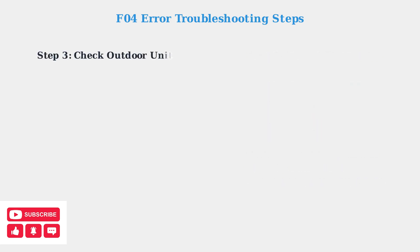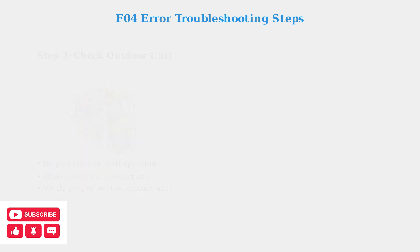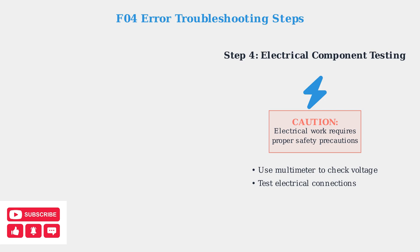If basic checks don't resolve the issue, examine your outdoor unit. The F04 error may originate from problems with the condenser, electrical connections, or restricted airflow around the outdoor equipment. For advanced troubleshooting, use a multimeter to check voltage and test electrical components. However, this requires electrical knowledge and proper safety precautions.